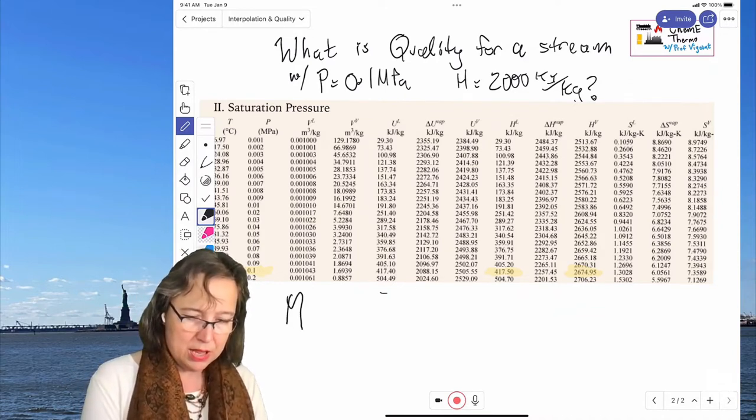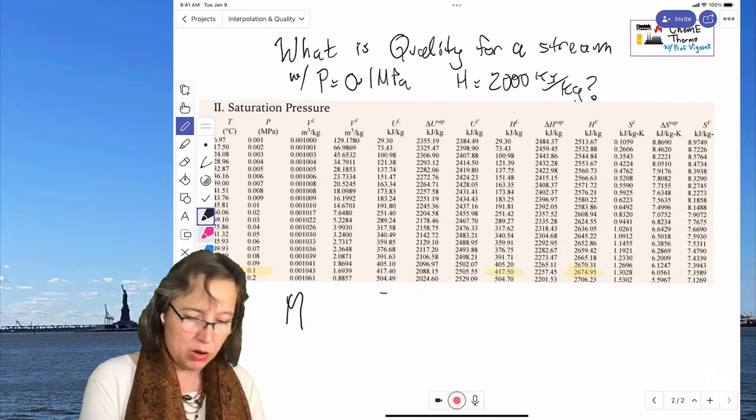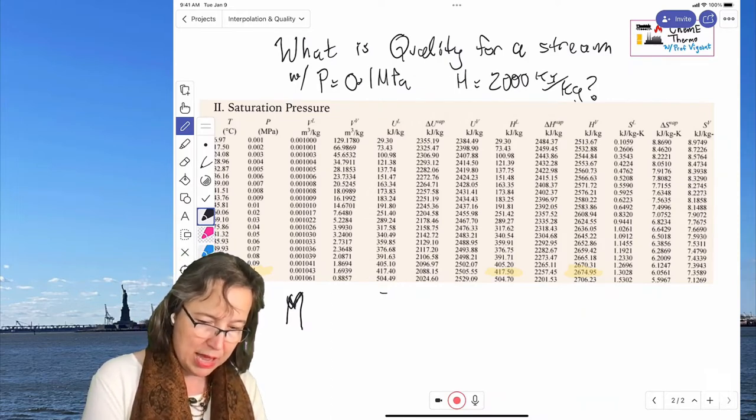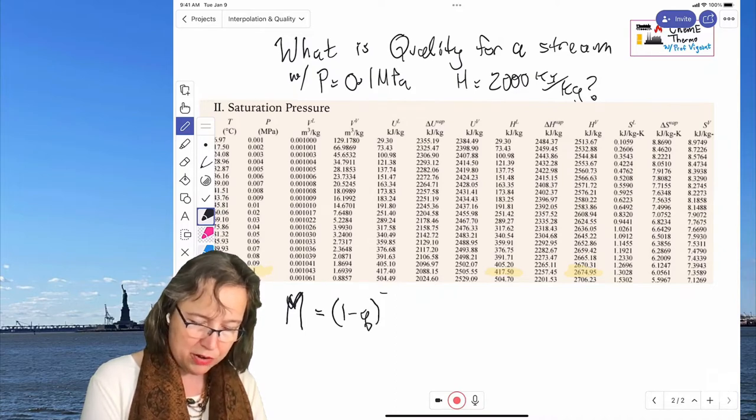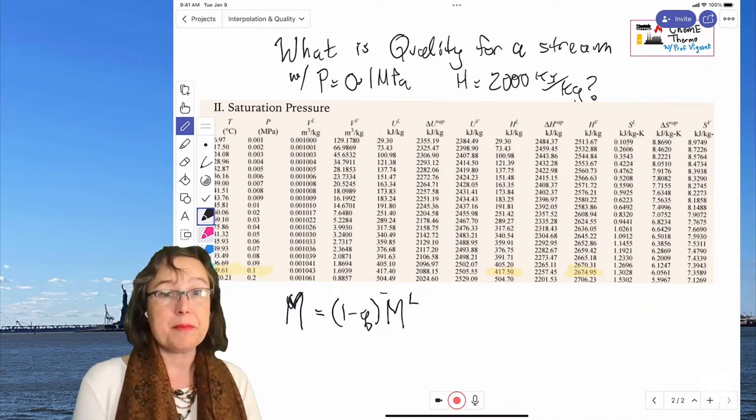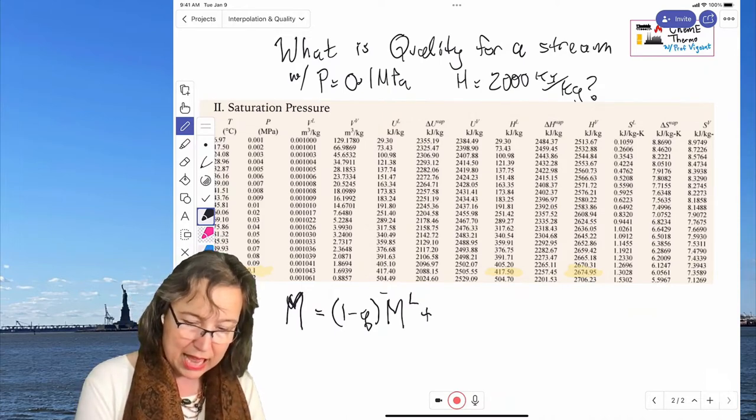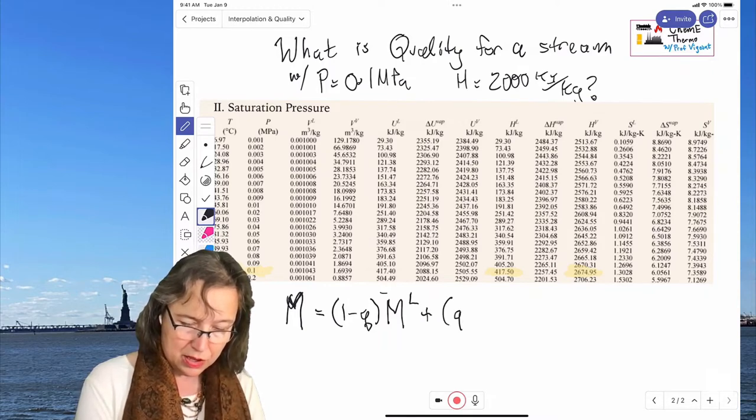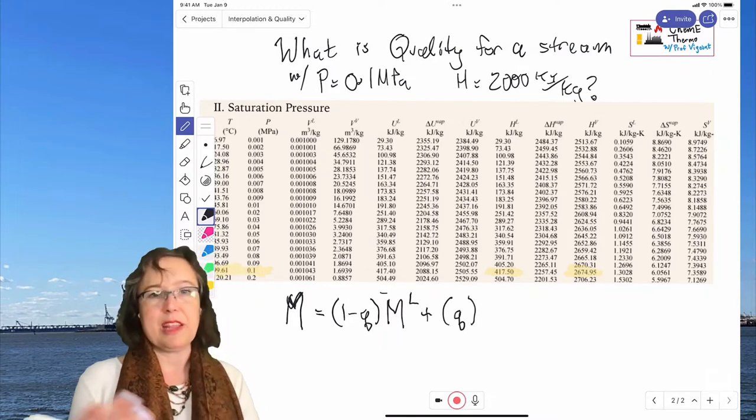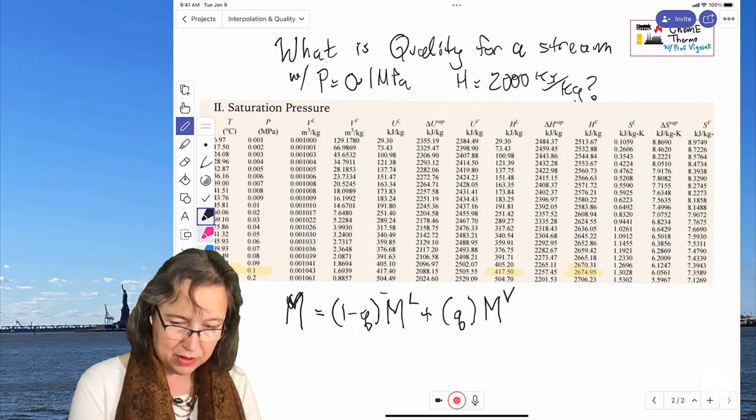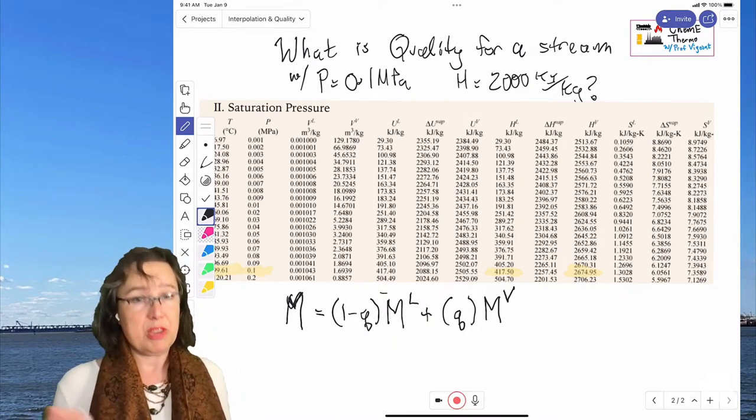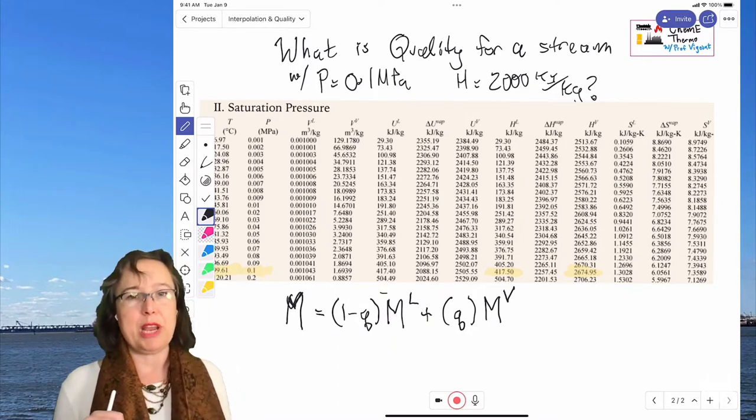So we have the property that we are looking for. That's M of this mixture. And that's going to be equal to one minus Q. So that's the liquid part times whatever that property is of the liquid. And then I am going to add to that Q, so that's the other piece, times whatever that property is for the vapor. Does that make sense? So that's a weighted average.